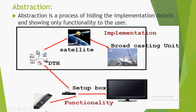We will see this with an example. Suppose if we tune to some channel by using a remote, we can see that the channel is changed in the TV — that is called functionality. If you click one button on the remote, that signal will reach the setup box, from setup box to DTH, from DTH to satellite, and satellite to broadcasting unit. That particular channel will be tuned and the tuned channel signal will be sent back through satellite, DTH, setup box, and changed in our TV. That is implementation, and that implementation will not be seen by us — that is called abstraction.